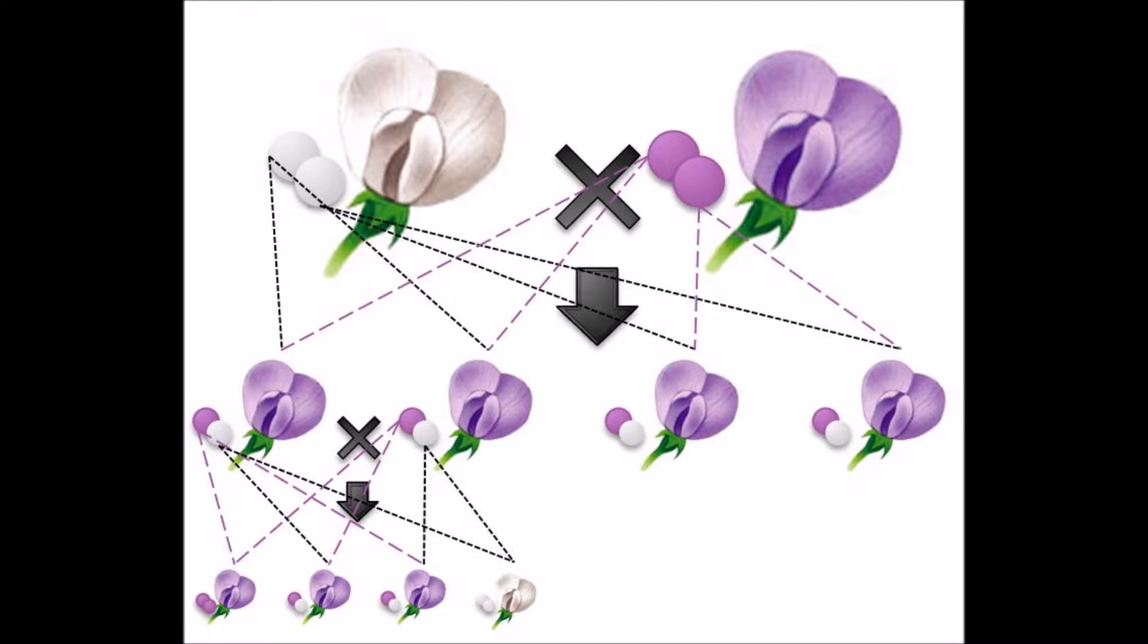Mendel was puzzled by problems like these, so he studied the traits of 10,000 peas. Wrinkled and round are two traits of a pea. Thousands of traits make up you and me.